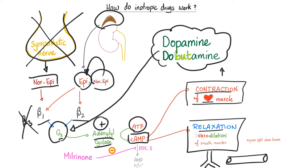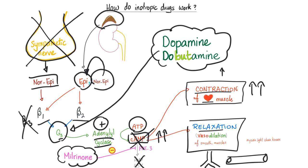Now the phosphodiesterase degrades cyclic AMP into AMP. Who's going to inhibit phosphodiesterase 3? Phosphodiesterase inhibitors such as dipyridamole, cilostazol, and also milrinone. When you inhibit the degradation of cyclic AMP, its level increases, leading to increased contractility. That's the purpose of milrinone — and inamrinone and amrinone are all the same thing. That's why milrinone, dopamine, and dobutamine can all be used to manage CHF.